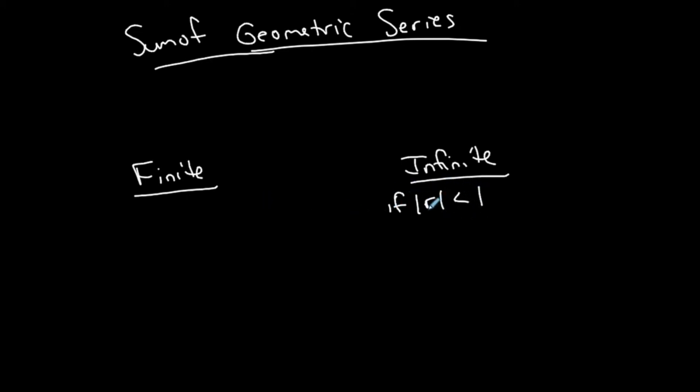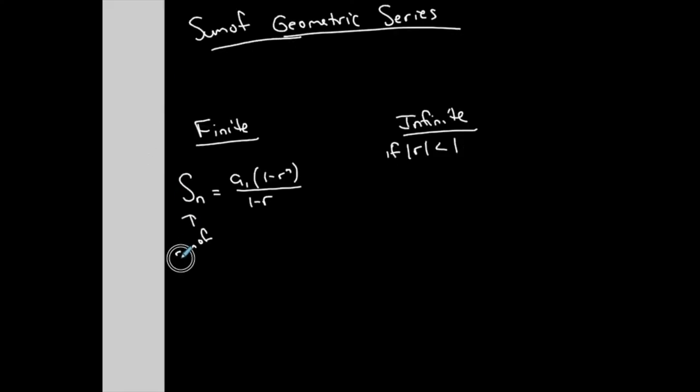If the absolute value of the common ratio is greater than 1, then I cannot do the infinite case, it has to be finite. Now let me write my formulas. This is the sum of the first n terms of a finite geometric series, which is a1 times 1 minus r to the n, all over 1 minus r. Sn is the sum, so let me write this out, the sum of the first n terms.